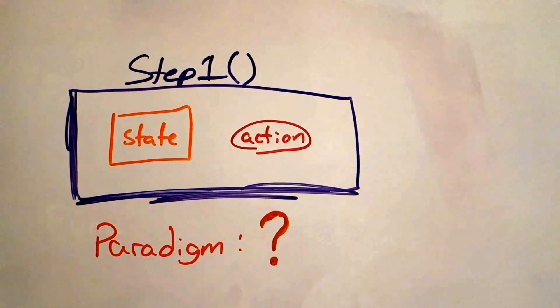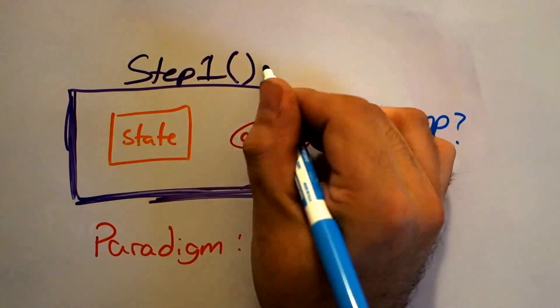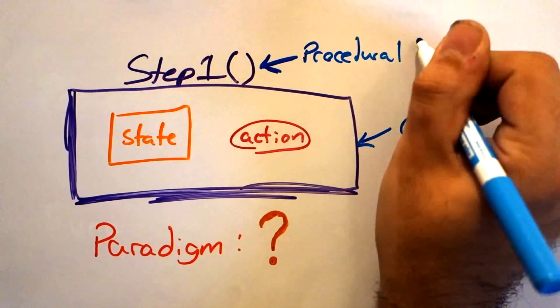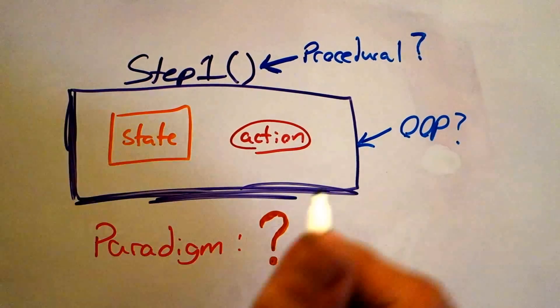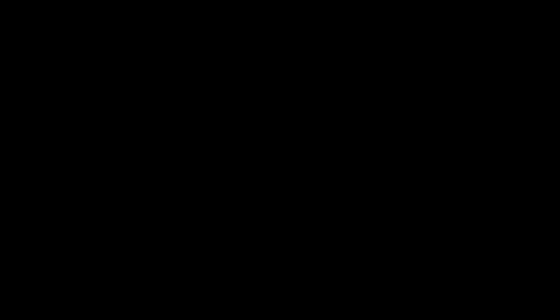You could look at the objects in encapsulation and call it object oriented. Or you could look at the steps and how it uses modify state and call it procedural. But in a weird way, it's both procedural and yet object oriented at the same time.